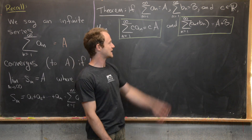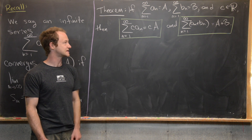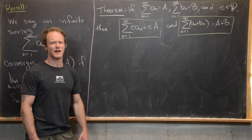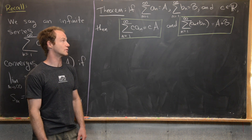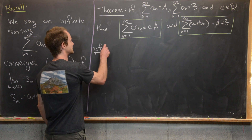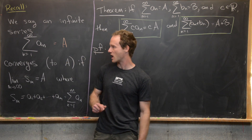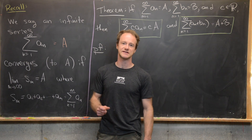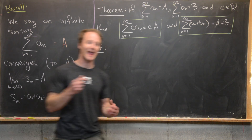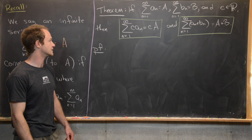Next we have the sum n goes from one to infinity of a sub n plus b sub n equals a plus b. So that's some sort of infinite associativity rule. These proofs will hinge on the definition of convergence of a series as the convergence of the sequence of partial sums, and some algebraic properties of partial sums that we've already proven in previous videos.